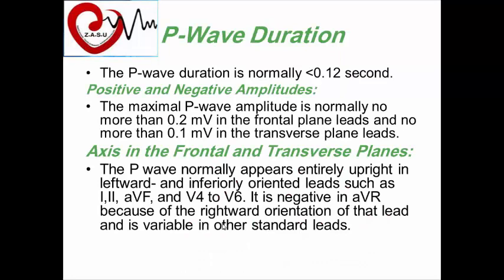P wave duration is normally less than 0.12 seconds. Regarding amplitude, the maximum P wave amplitude is normally no more than 0.2 millivolts in the frontal plane leads, and no more than 0.1 millivolts in the transverse plane leads.